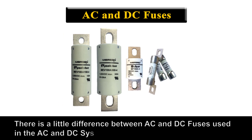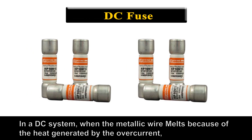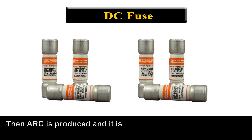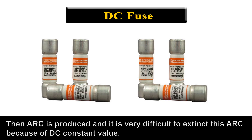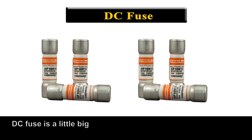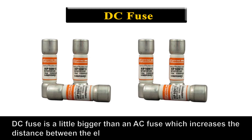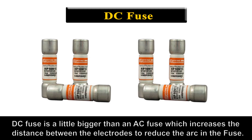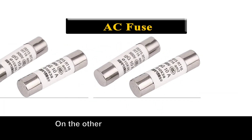There is a little difference between AC and DC fuses used in AC and DC systems. In a DC system, when the metallic element melts because of the heat generated by the overcurrent, an arc is produced and it is very difficult to extinguish this arc because of the DC constant value. So, in order to minimize fuse arcing, DC fuses are a little bigger than AC fuses, which increases the distance between the electrodes to reduce the arc.